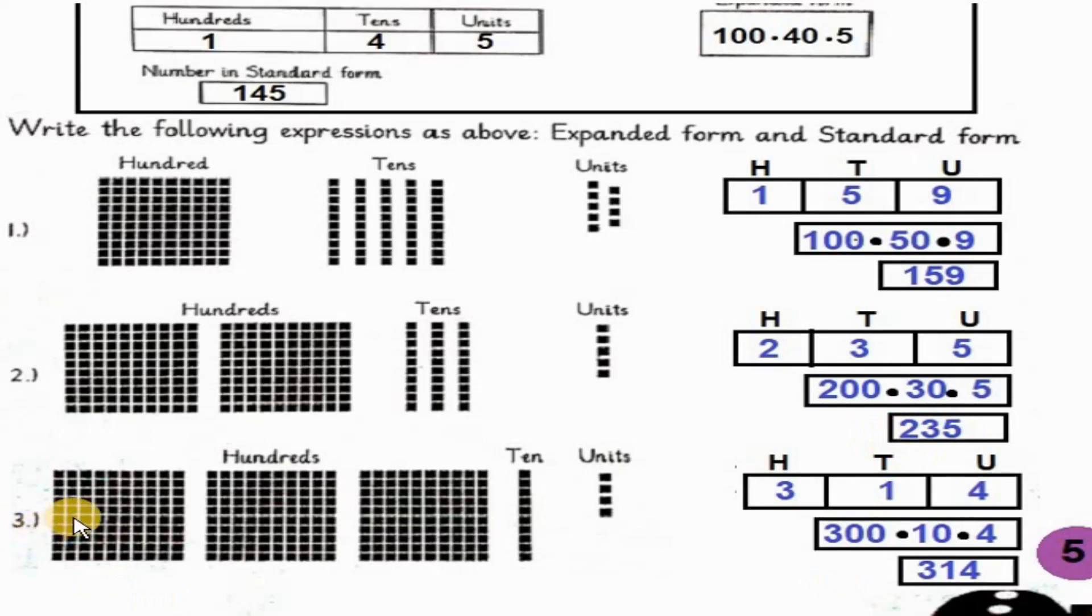Part 3. Hundreds کتنے ہے? 1, 2, 3. Tens کتنے ہے? 1. So 10s is equal to 1. Units کتنے ہے? 1, 2, 3, 4. So units is 4. The standard form is 314. 314.